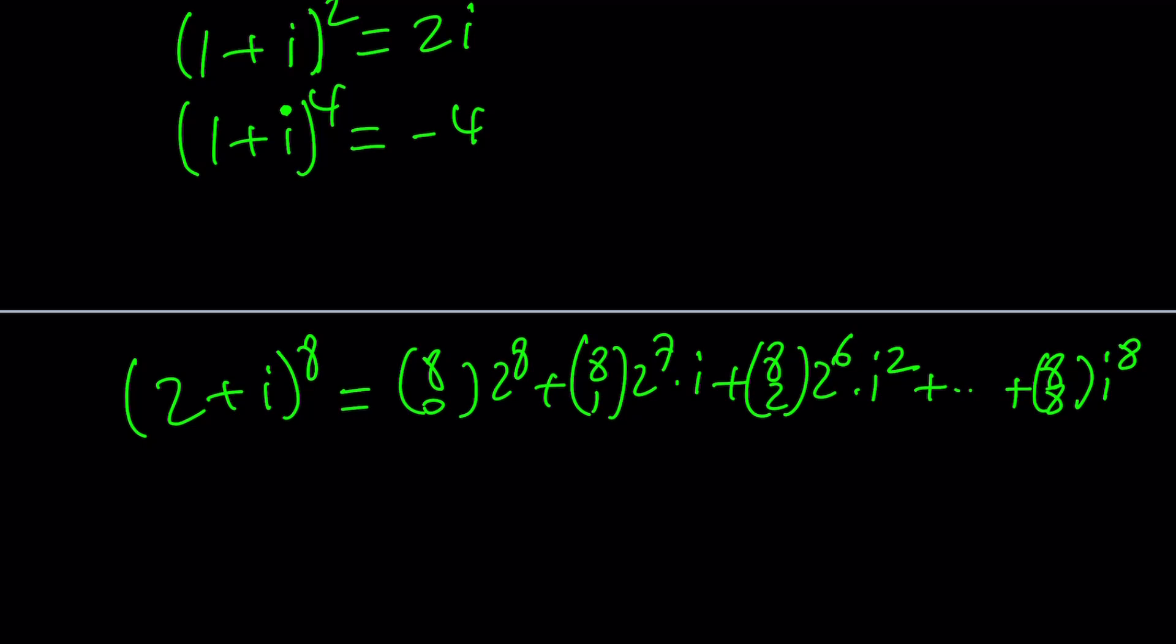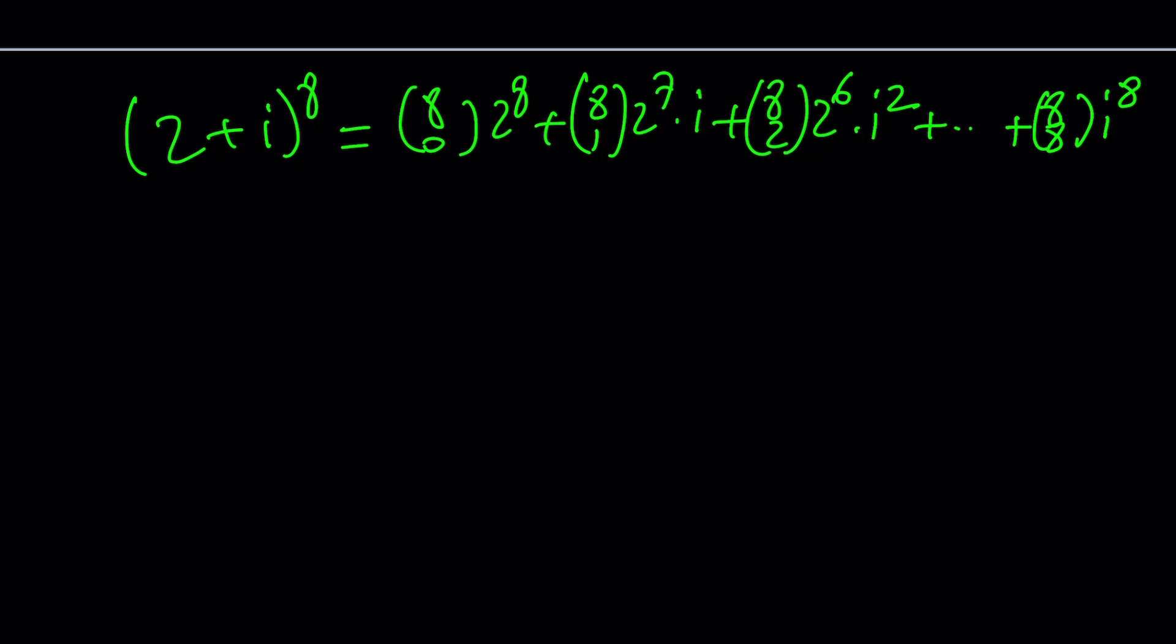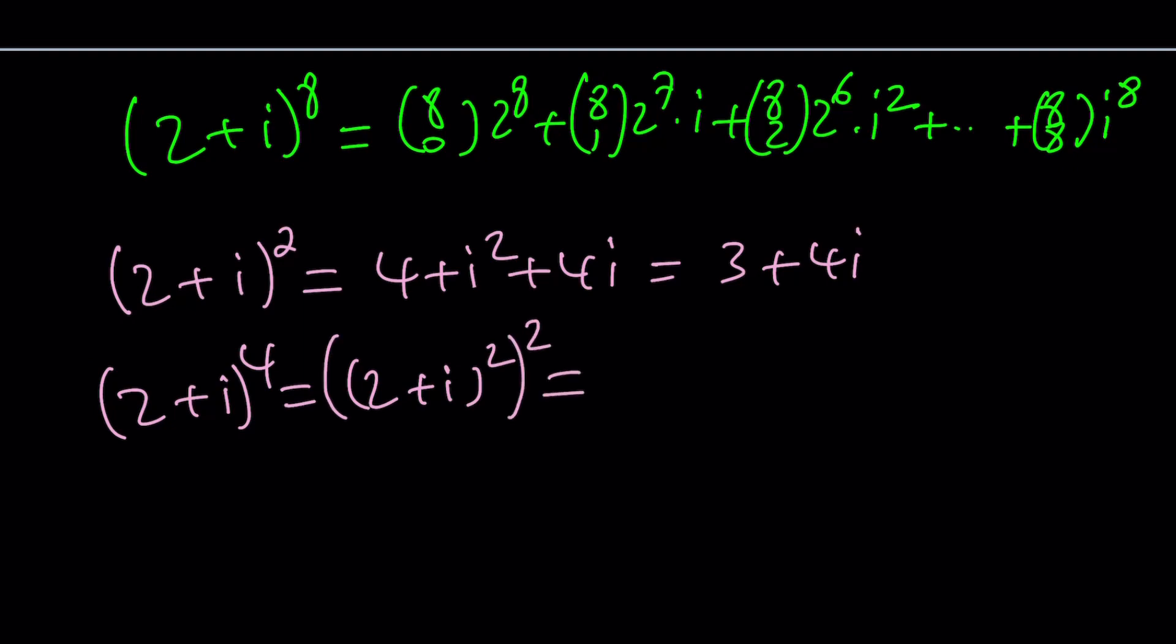Or you can take a shortcut and just raise this number to the second power first because 8th is 2 times 2 times 2. So I can just go ahead and square this number first. That's going to give me 4+i^2+4i. i^2 is -1 so this is going to be 3+4i. And then you can go ahead and kind of write this as (2+i)^4 and that will be (2+i)^2 squared. But I already know that (2+i)^2 is 3+4i. And then if you square it one more time you're going to get the 4th power and that's going to give you 9+24i+16i^2 which can be written as -16. So this will give you -7+24i.